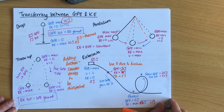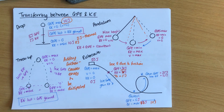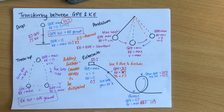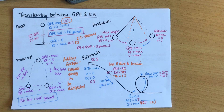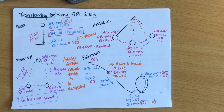So that is kinetic energy and gravitational potential energy transferring between the two. This is called the law of conservation of mechanical energy, and how friction gets in the way. Hopefully it was helpful. Thank you.